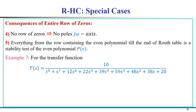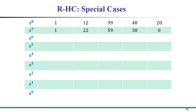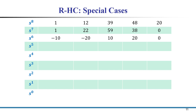Let us now analyze the stability of another transfer function. We write the coefficients in the usual way as done previously, then calculate the Routh-Hurwitz entries using the standard procedure. When you do the calculation you will get certain entries, which can be simplified by dividing the whole row by 10.